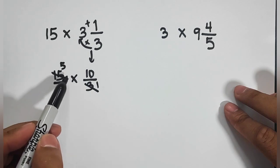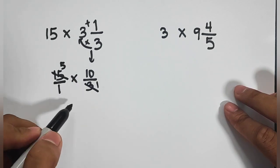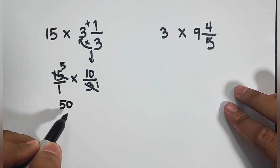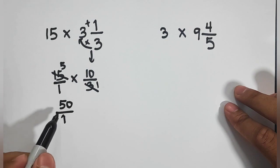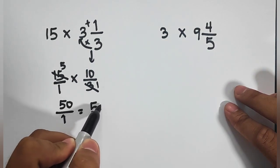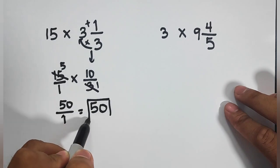So as you can see, all we have now is 5 times 10, that is 50, over 1 times 1 which is equal to 1. And to simplify our answer, 50 over 1 is equal to 50. This is the answer for item number 2.